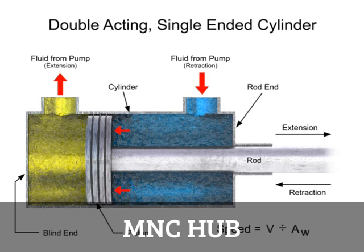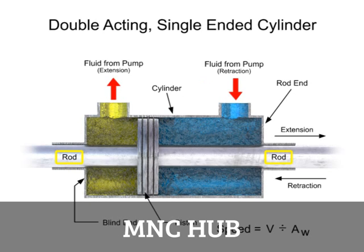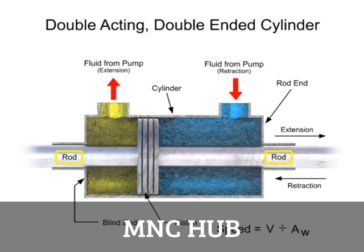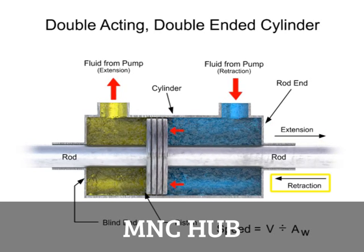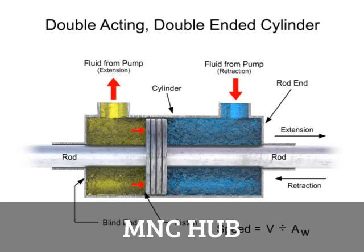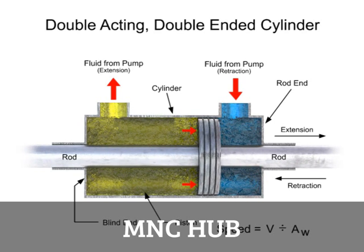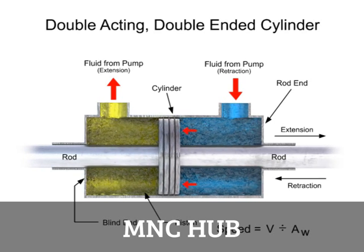All the cylinders shown to this point have been single-ended — they have only one working rod. On special cylinders, two rods may be used; these are called double-ended cylinders. They have two rods, both attached to the piston, each coming through an end cap. Double-ended cylinders work similarly to single-ended, but are used when a constant speed is required for both the extension and retraction strokes. Since the flow rate is the same and the piston areas are the same, the speed for extension and retraction is also the same.